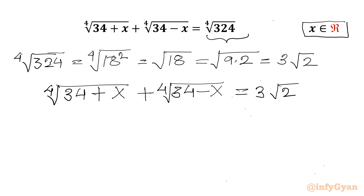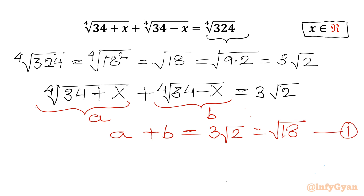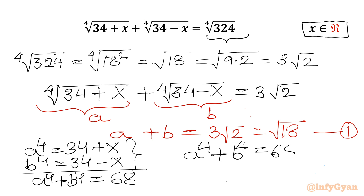Now I will use substitution. I will consider our first term as a and the second term of the LHS as b. So the first equation from this substitution is a plus b equals root 18 — this is equation 1. For the second equation, since a equals 4th root of (34 plus x), we have a to the power 4 equals 34 plus x. Similarly, b to the power 4 equals 34 minus x. Adding both gives a⁴ plus b⁴ equals 68 — this is equation 2.